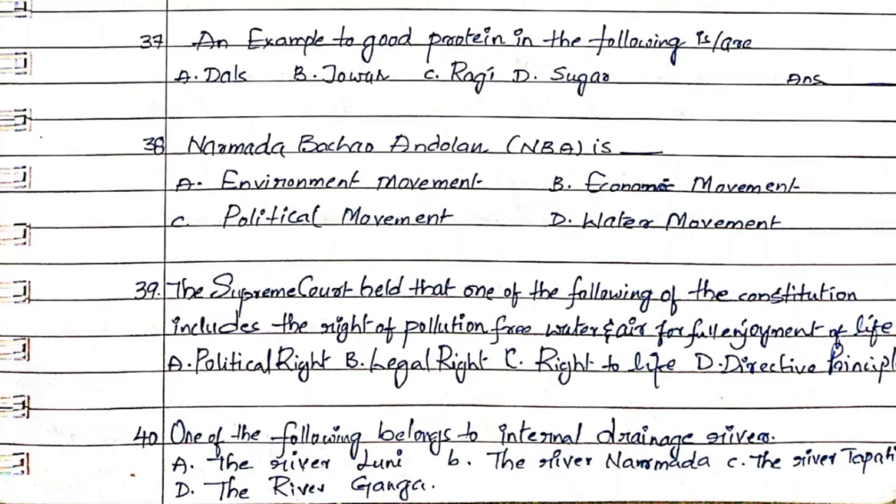Question 38: Narmada Bachao Andolan is. Option A. An environmental movement, Option B. An economic movement, Option C. A political movement, Option D. A water movement. The answer is Option A. An environmental movement.